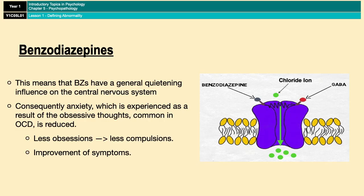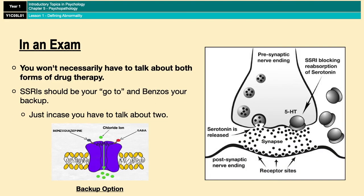In an essay or exam scenario, you won't necessarily have to talk about both forms of drug therapy in your answer. SSRIs should always be your go-to — those are the most important ones. Benzodiazepines can be your backup, just in case you have to talk about two, because it's not unheard of to be asked to outline and evaluate two or more forms of something. If you don't have to talk about two or more, or if it doesn't specifically ask for two forms of drug therapy, make SSRIs your go-to every time. It's just nice to have a second option.